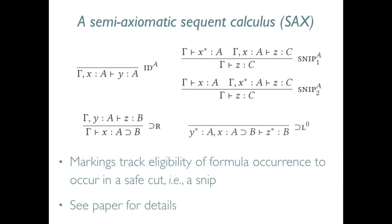To make all of the preceding ideas formal, we can introduce separate SNP rules. These SNPs are cuts that may safely remain in cut normal proofs. Variables and markings on those variables are used to ensure that these SNPs are indeed used in only safe ways. I won't present these in detail, but you can find them described in our paper.